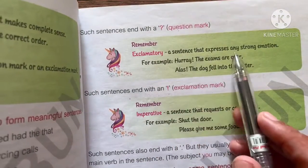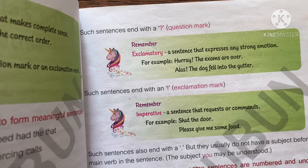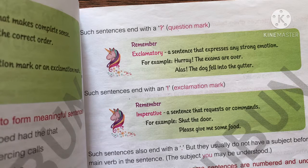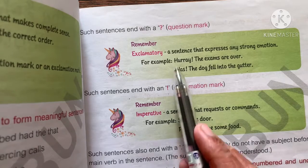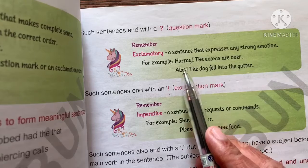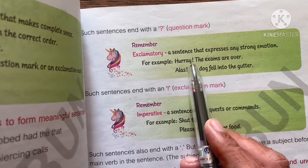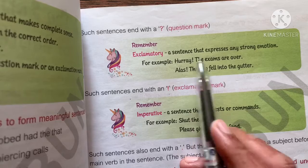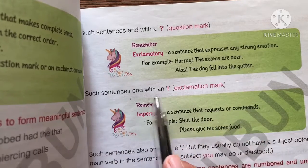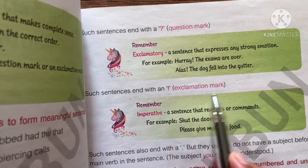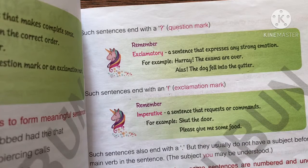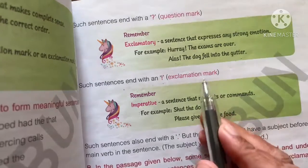Exclamatory sentences express any strong emotion — happiness, sorrow, any emotions. When we explain something with emotions, such sentences are exclamatory. For example, 'Hooray! The exams are over.' This shows excitement that the exams are finished, and after it comes an exclamation mark. Such sentences end with an exclamation mark.